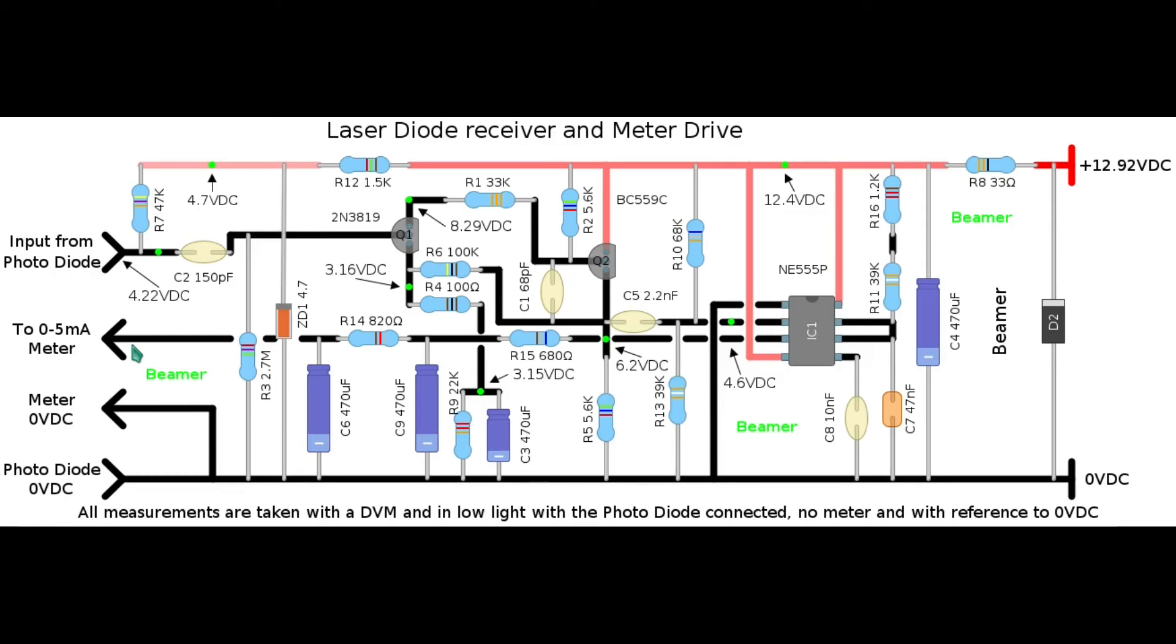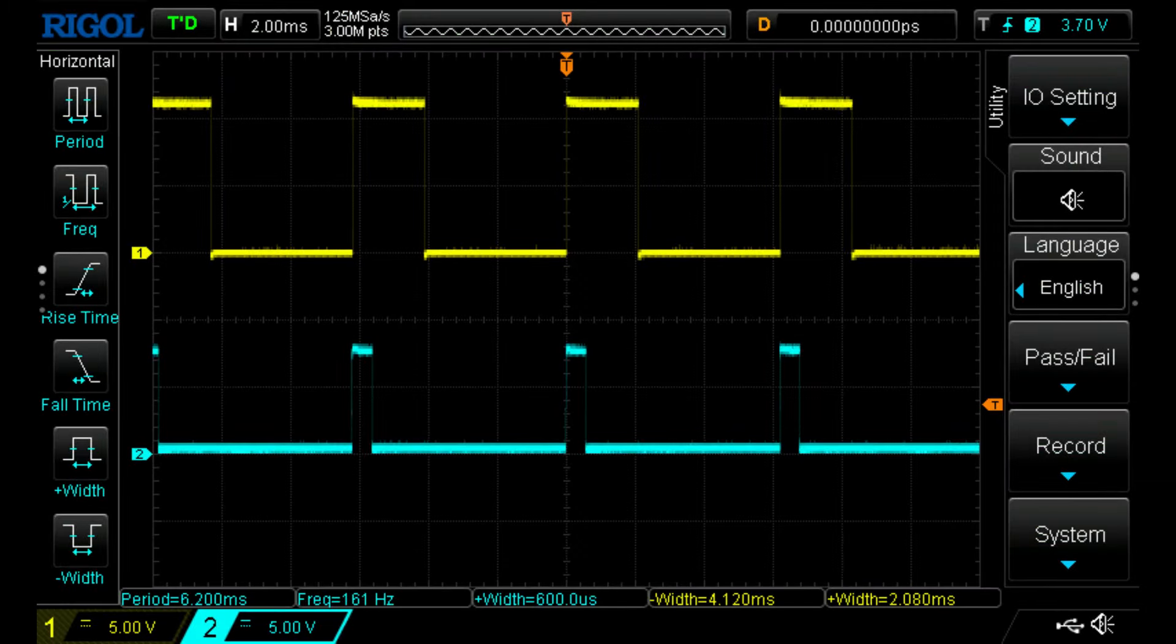This is a scope picture taken from both the laser driver board and receiver board. The lower blue trace represents the laser drive of a 600 microsecond pulse. The yellow upper trace is triggered by the positive going edge of the lower blue trace and establishes a 2.1 millisecond pulse on the receiver board to drive the moving coil meter. The lower blue trace is taken from the output of the 7805 on the driver board. And the yellow upper trace is taken from the output of the 555, that's pin 3, of the receiver board.